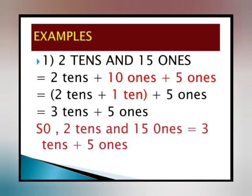Humne aage seekha na, 10 ones ko hum kaise regroup karte hain — 1 ten. So jab hum 1 ko 10 times add karte hain to ek 10 banta hai. So 10 ones is equal to 1 ten, and 5 ones ka 5 ones hi rahega. Humne kya kiya? 2 tens ka 2 tens hi rehne diya. Jo 15 ones the unko humne split kiya — 10 plus 5. So 10 ones ko humne 1 ten bana diya. Now students, 2 tens plus 1 ten hota hai 3 tens. Phir humne 5 ones as 5 ones rakha. So 2 tens and 15 ones is equal to 3 tens and 5 ones.